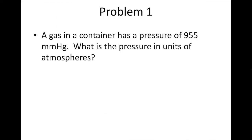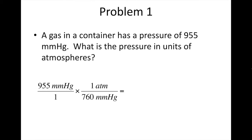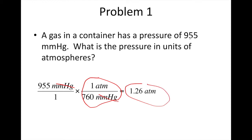Let's try a practice problem. A gas in a container has a pressure of 955 millimeters of mercury. What would this pressure be in atmospheres? Using dimensional analysis, we know that one atmosphere equals 760 millimeters of mercury. So we multiply 955 mmHg by the conversion factor, the mmHg units cancel, and we divide 955 by 760 to get 1.26 atmospheres. So 955 millimeters of mercury equals 1.26 atmospheres.